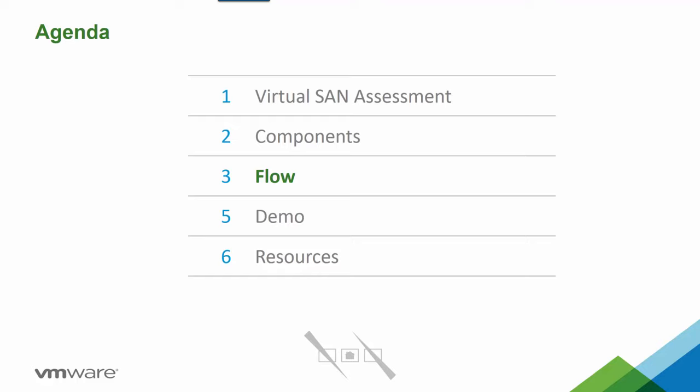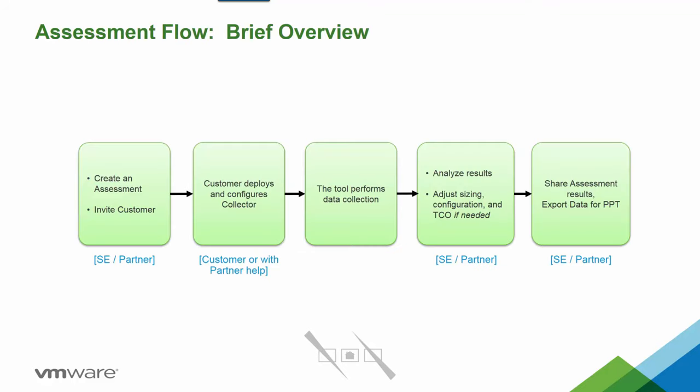Now I'll cover the flow of the entire vSAN assessment process. The assessment starts with the partner creating an assessment in the portal for the customer, then sending an invite. The customer accepts and downloads the virtual appliance collector, installing it into their vSphere environment — something the partner can help with or the customer can do themselves. Once the set number of collection days is reached, the portal analyzes the data, creates a report, and the partner can review and share it with the customer.